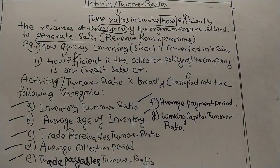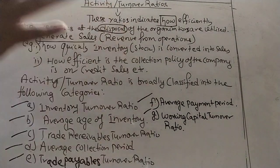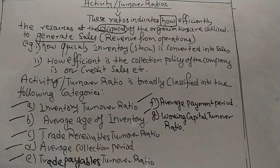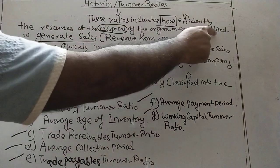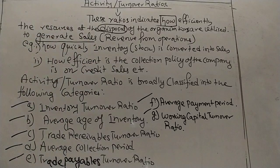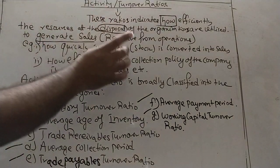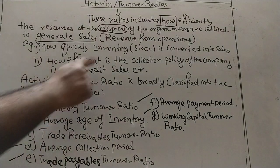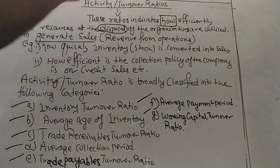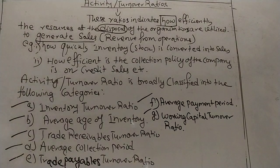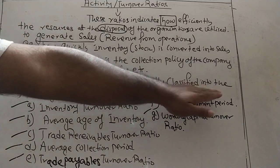Let me repeat this for your class notes, as it is directly associated with your board exams. These ratios indicate how efficiently the resources at the disposal of the organizations are utilized to generate sales — that is, how quickly inventory can be converted into sales and how efficient the collection policy of the company is on credit sales. These are the reasons why turnover ratios are calculated.